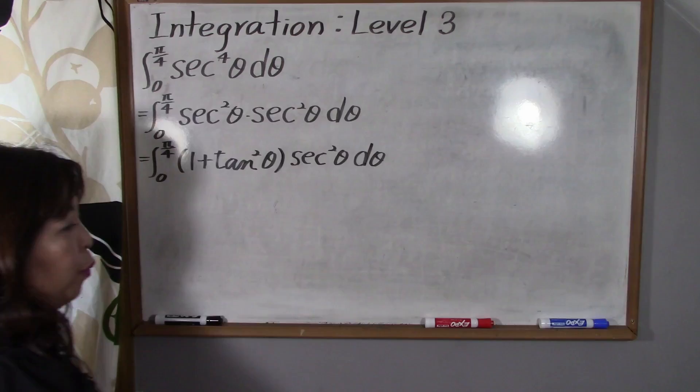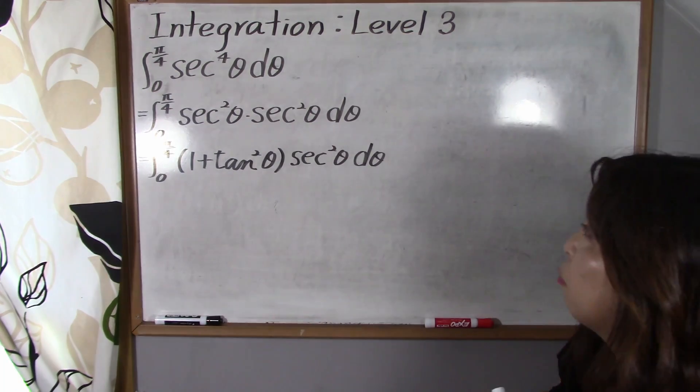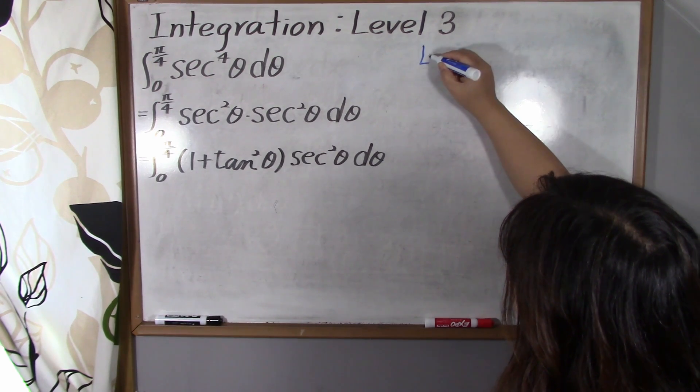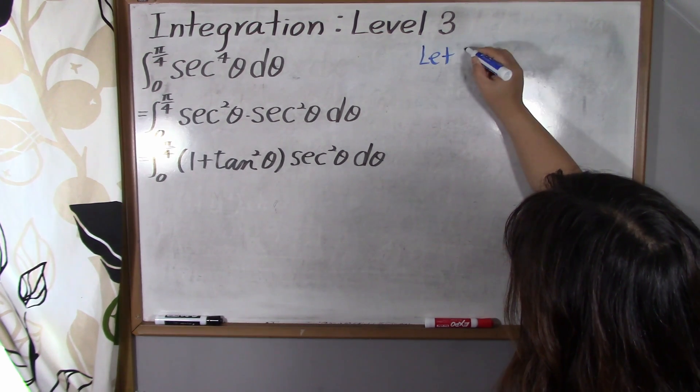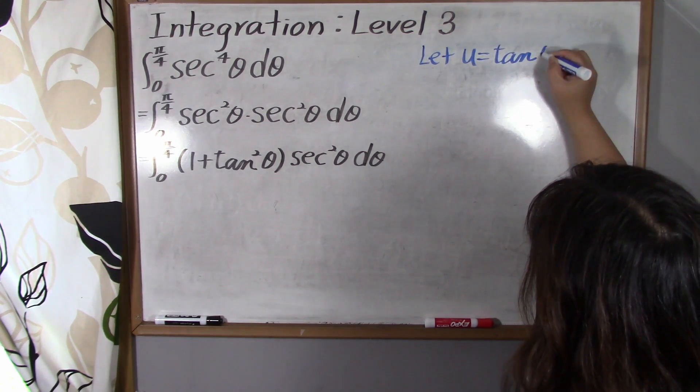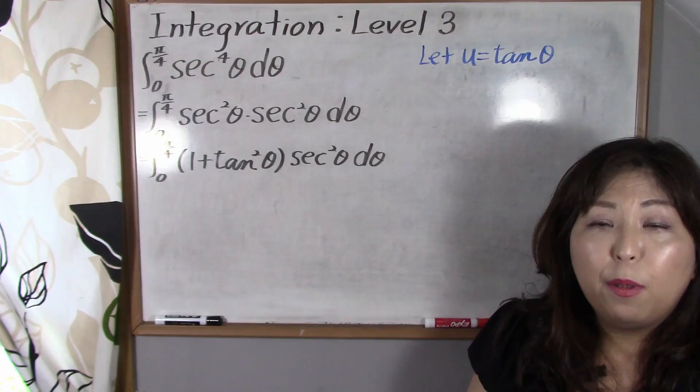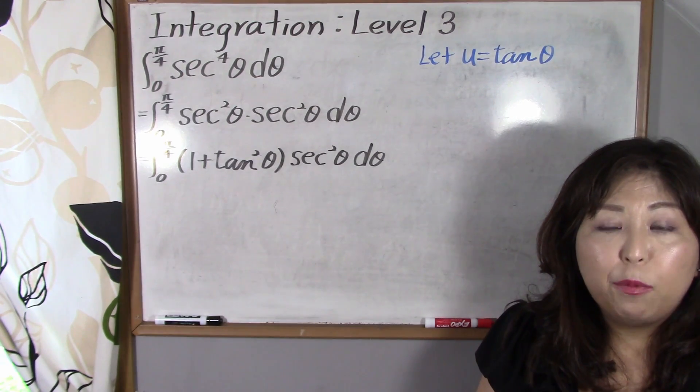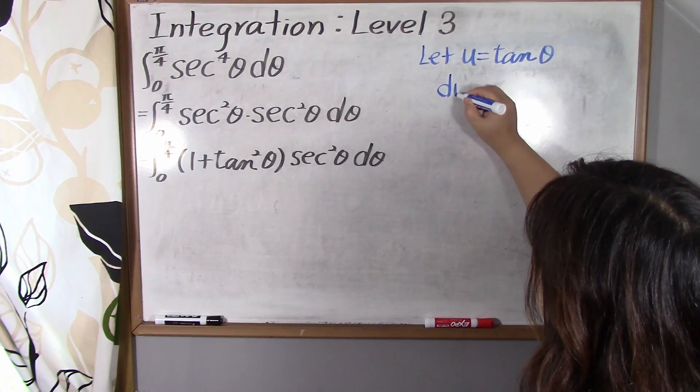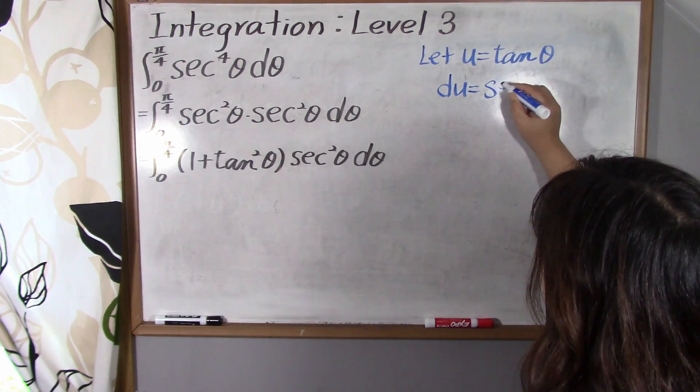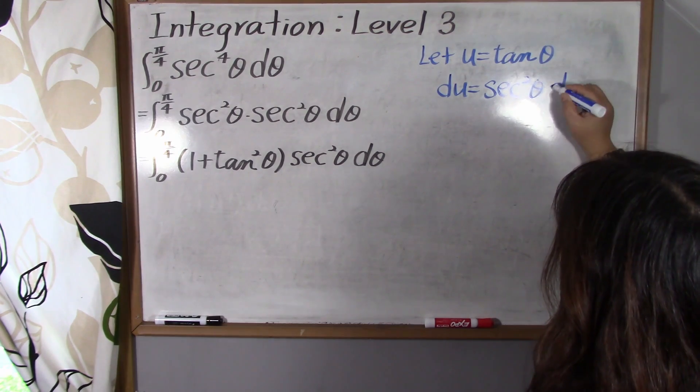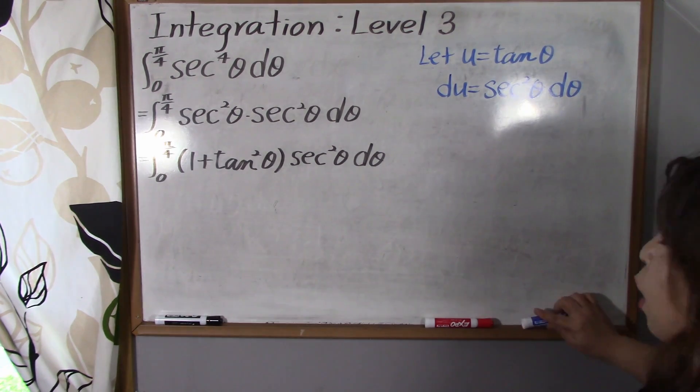So now we're going to use u substitution. So here I'm gonna show you that u is equal to tangent of theta. This is the point. And next step, we're gonna differentiate this equation. That is, du is equal to secant squared of theta d theta.